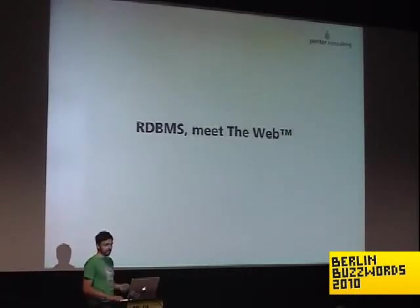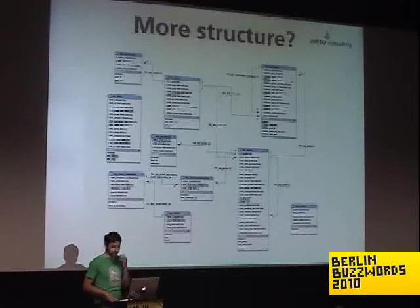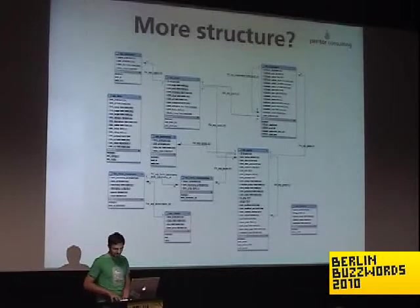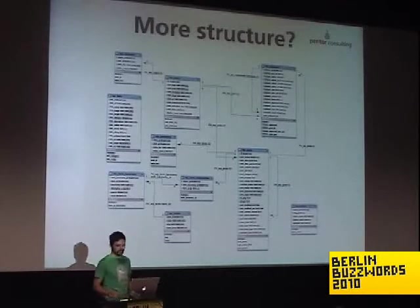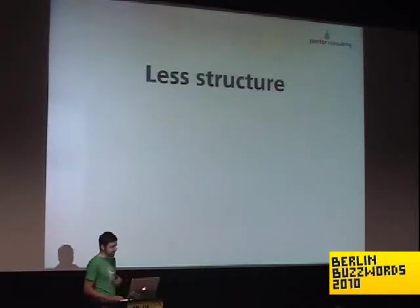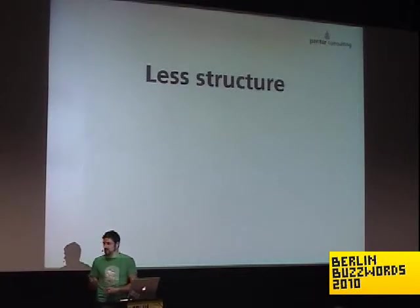The fun started when relational databases met the web. This is a WordPress schema — it's really good fun to look at. It's not even complex, but it's already heavily denormalized, which is kind of ironic. The web didn't need more structure — quite the opposite. It needed less structure. I wanted my data to be whatever I want. Someone said earlier today that 80% of the data we produce is unstructured. Yeah — that is pretty much my point.